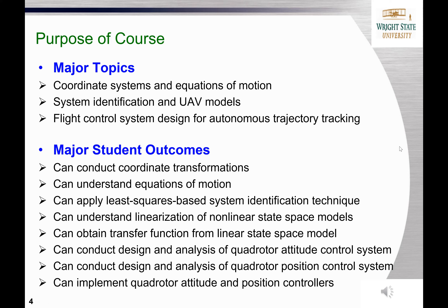In this course, we will take you through all important steps of flight control system design. We'll start with coordinate transformations, which is essential for understanding the equations of motion. A least-squares-based system identification technique will be used to estimate key model parameters, including the torque and thrust coefficients. After obtaining a non-linear model of the UAV, we will conduct linearization to obtain transfer function models of the UAV. These transfer function models will then be used to conduct control analysis and design, including attitude control and position control.